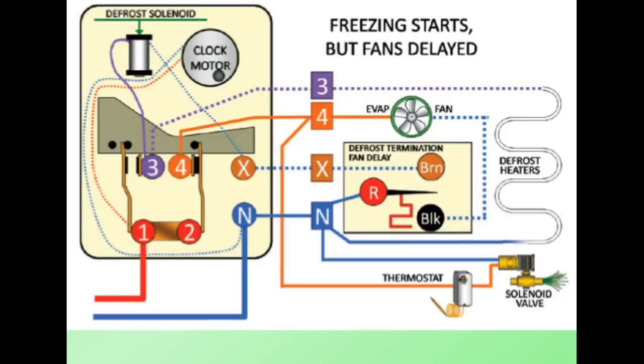Okay, so we have now terminated the defrost cycle. The freezing of the coil starts. We have power to the solenoid valve but the fan is delayed. Remember we looked at defrost termination and fan delay - there's a dead band between 25 degrees and the 55 degree contact.